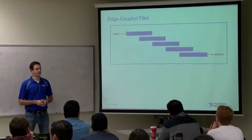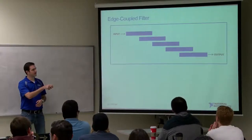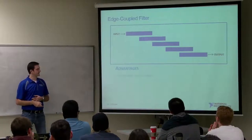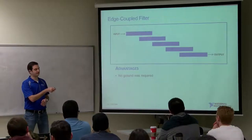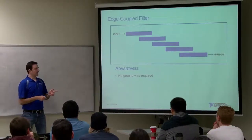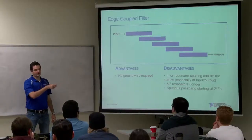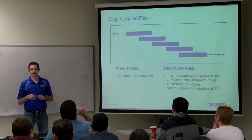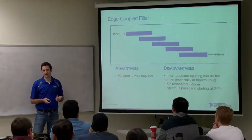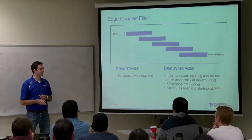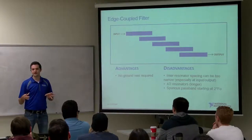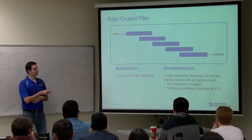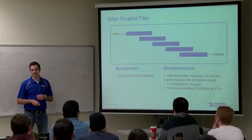The edge-coupled bandpass filter uses copper strips placed adjacent to each other with no connection — energy is coupled over to the next stage at a certain resonant frequency. An advantage is that no ground vias are required. A disadvantage is that spacing between adjacent resonators can become very narrow depending on the frequency and bandwidth you're designing for, sometimes so tiny it's impossible to build in reality. These resonators are also a half wavelength long, making them longer than quarter-wavelength counterparts.